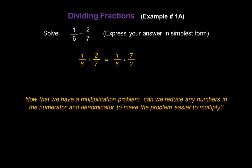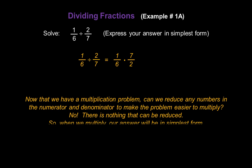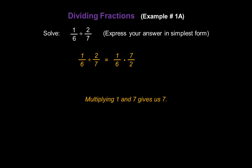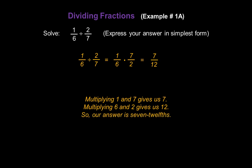Now that we have a multiplication problem, can we reduce any numbers in the numerator and denominator to make it easier to multiply? In this case, no — there's nothing that can be reduced, so our answer will already be in simplest form. Multiplying the numerators: 1 and 7 gives us 7. Multiplying the denominators: 6 and 2 gives us 12. So our answer is 7 twelfths.